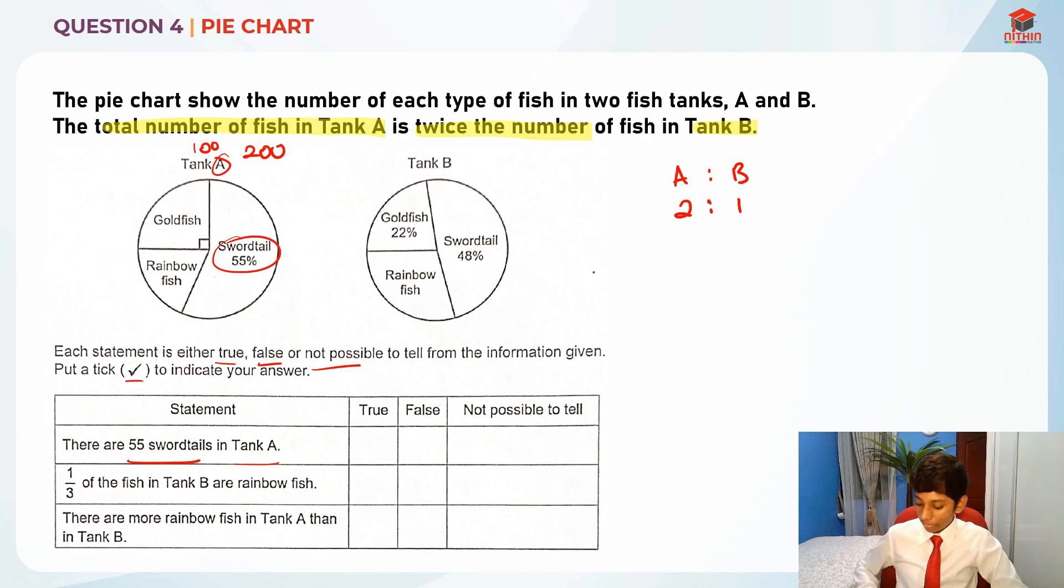So the number of swordtails will actually be 110 instead of 55. It really depends on the number of total fish in that tank.